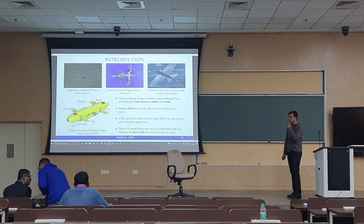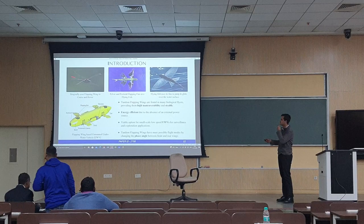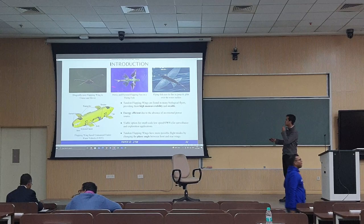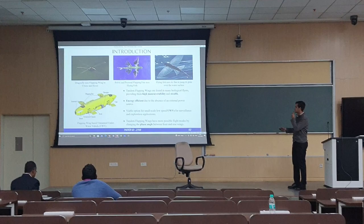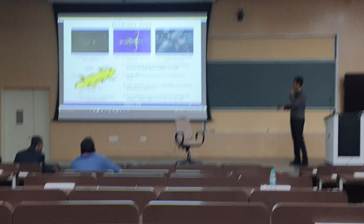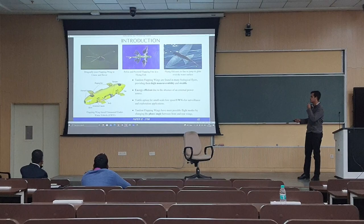To introduce the topic, tandem flapping wings are basically a pair of wings on either side of the body, total four wings in this case. For example, you can see the dragonfly here uses flapping wings to cruise and hover, and similarly the flapping fins in a flying fish are used to jump and glide. Flapping wings have a lot of possible flight modes and characteristics such as high manoeuvrability and stealth, energy efficiency because there is no extra power source like a jet engine as in a fixed wing aircraft. It is also a viable option for small scale low speed underwater vehicles, one example being deep sea surveillance.